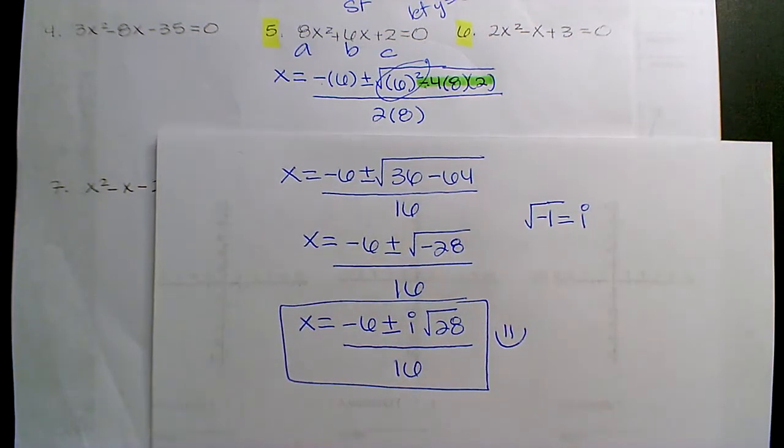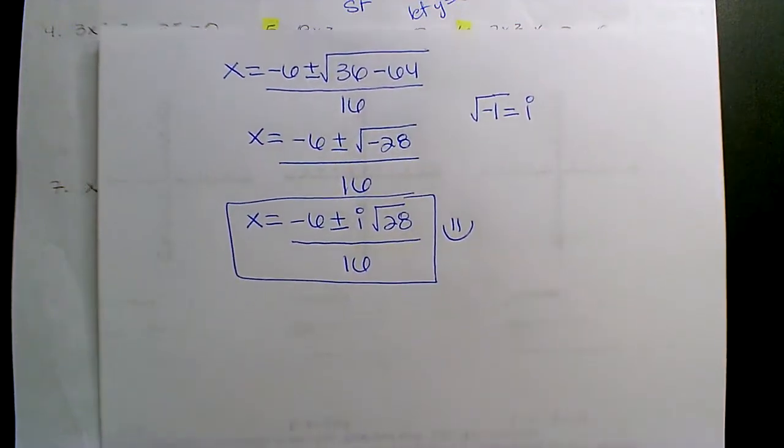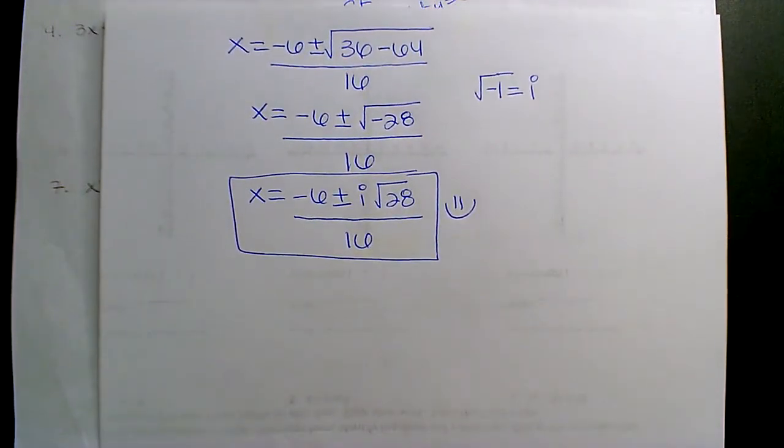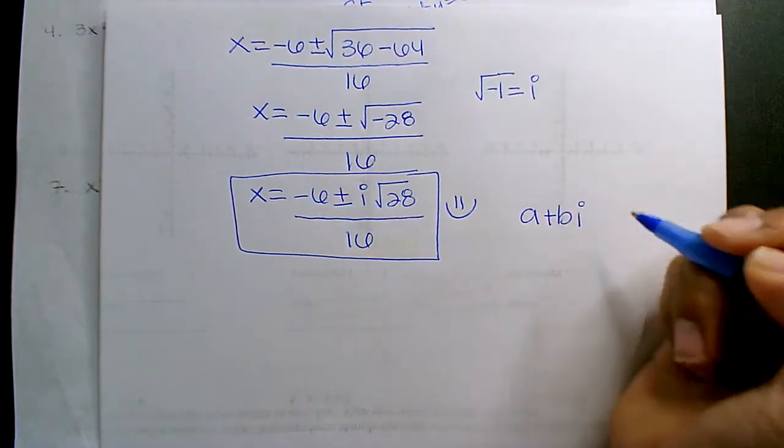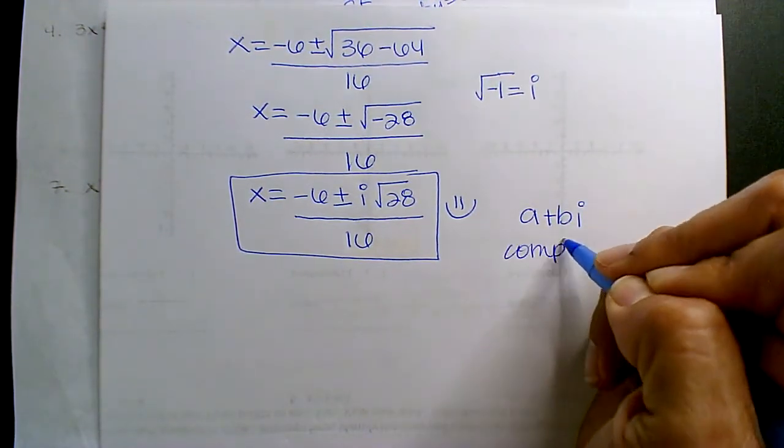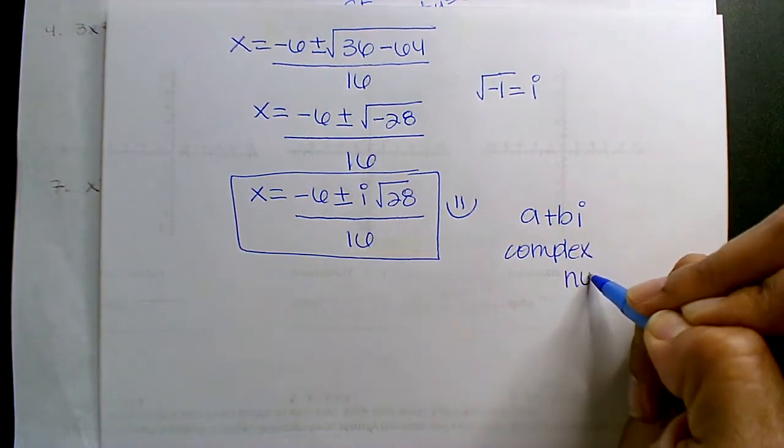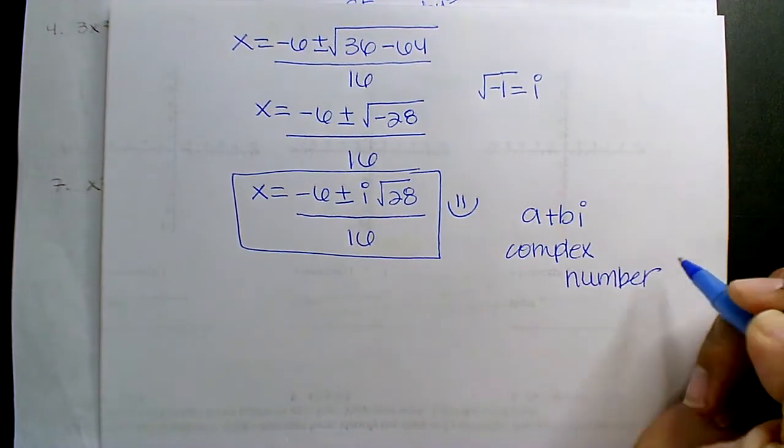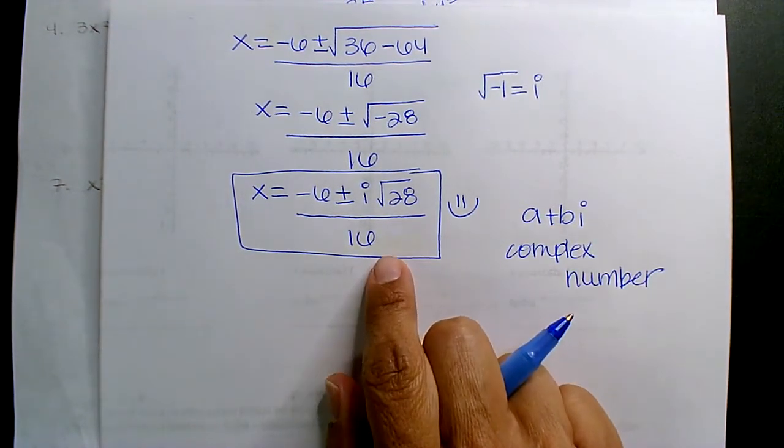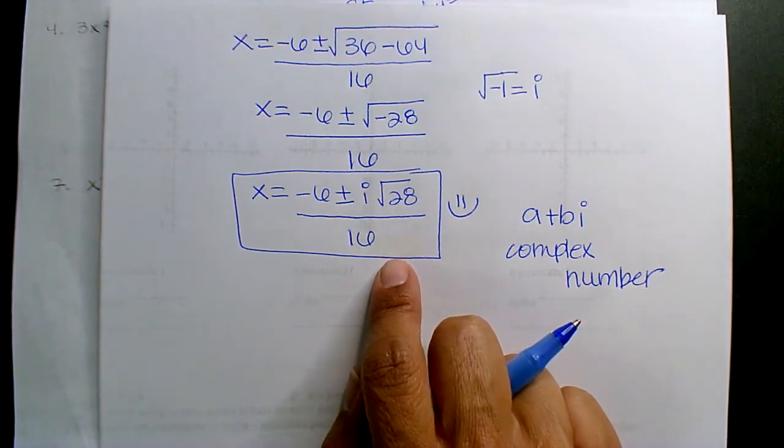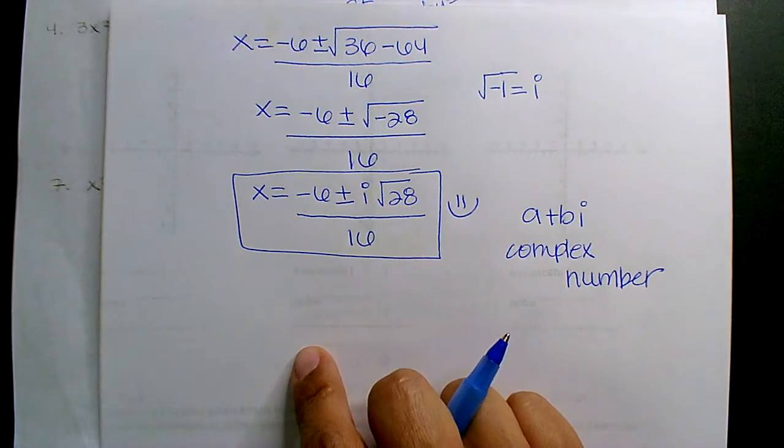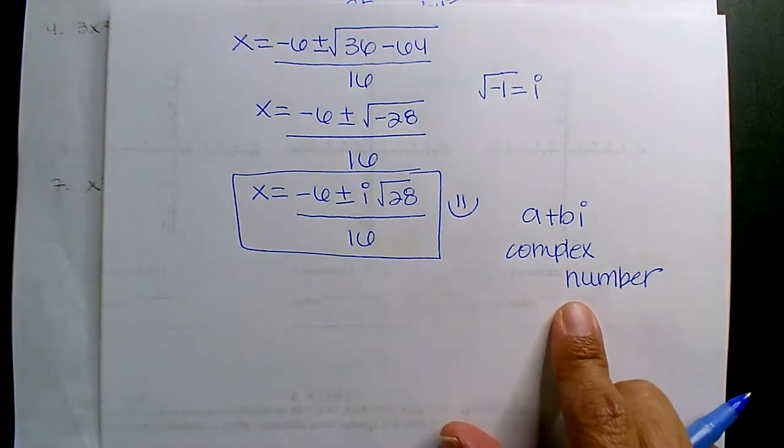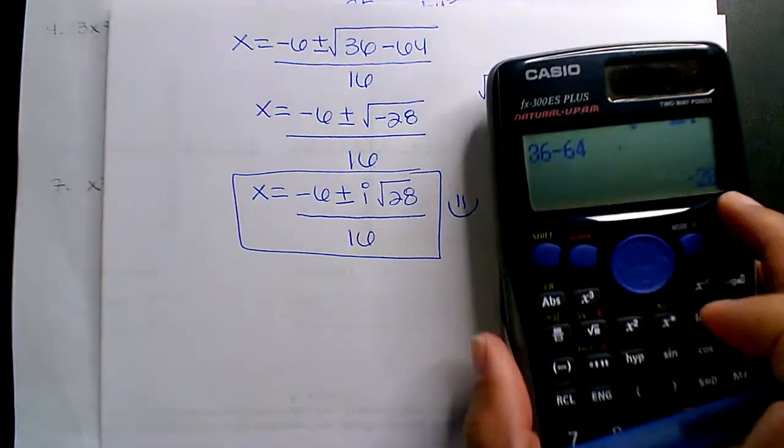However, you're going to take your SATs or ACTs or a state test, and you just have to know that you should still be able to get it into a complex number. Even though if we were quizzing or testing and you gave me this, you'd get 100%. But let's just keep going. Let's just practice it. What's radical 28? 5.3.